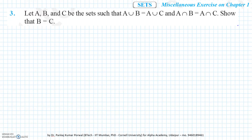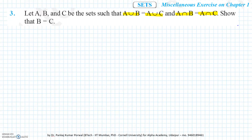Before we proceed to the solution, I want to highlight some important concepts. First, when two sets are equal, every element in the first set is also present in the second set. So every element in A union B will also be in A union C, and any element in A intersection B will also be in A intersection C. Second, to prove two sets are equal, we prove that the first set is a subset of the second, and the second set is a subset of the first.